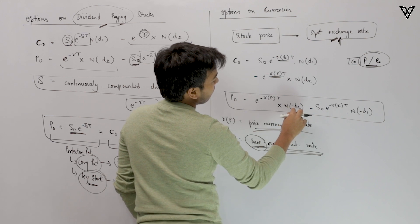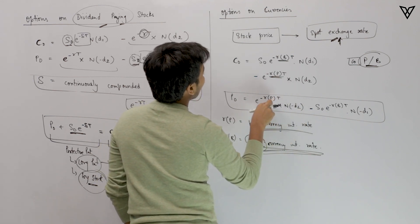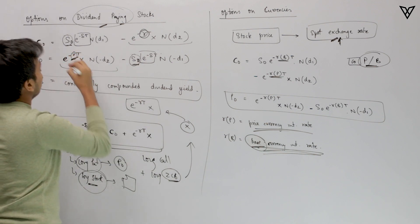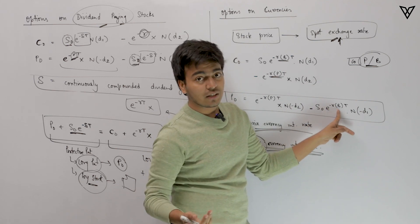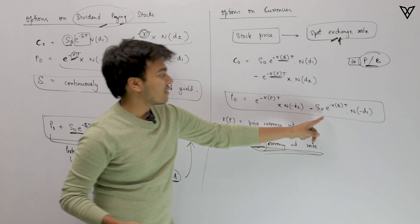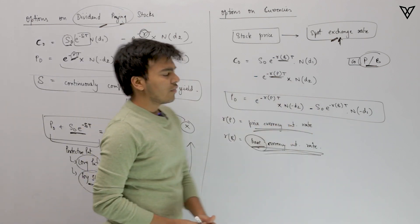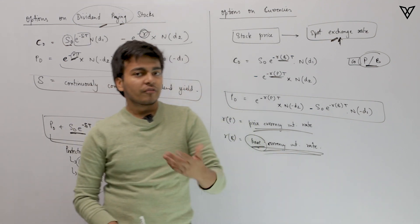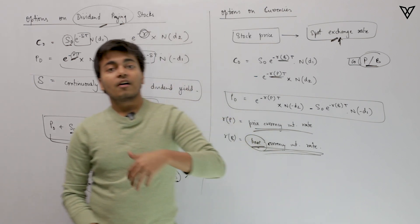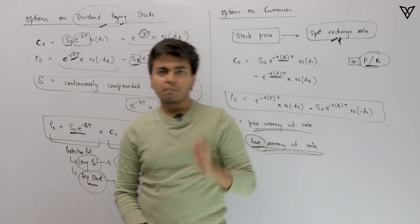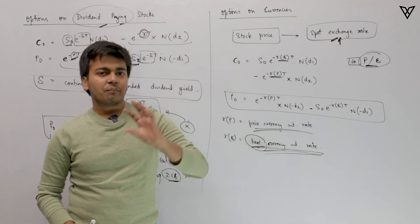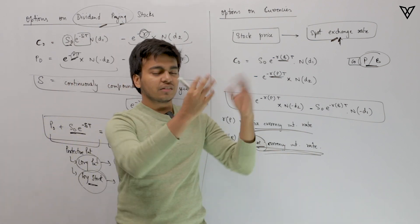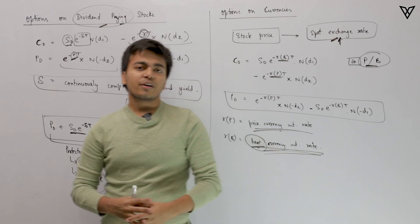In the same way, for the put option, you have X × N(−d2) discounted at e^(−Rp × T), where Rp is the price currency interest rate, which acts as your risk-free rate. With the spot exchange rate, you use Rb — the base currency interest rate — which serves in place of the dividend yield. If you have studied economics, you will understand this easily. If not, once you complete the economics section on currencies, you can come back to this and it will make much more sense.